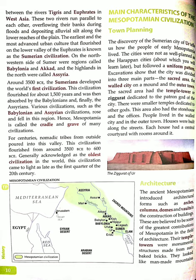Now, architecture is a general term to describe buildings. The Mesopotamians introduced architectural forms such as arches — meaning curved tops — columns, which are pillars, domes, which are round roofs, and vaults — an arch-like structure. This is believed to be one of the greatest contributions of Mesopotamia in the field of architecture.